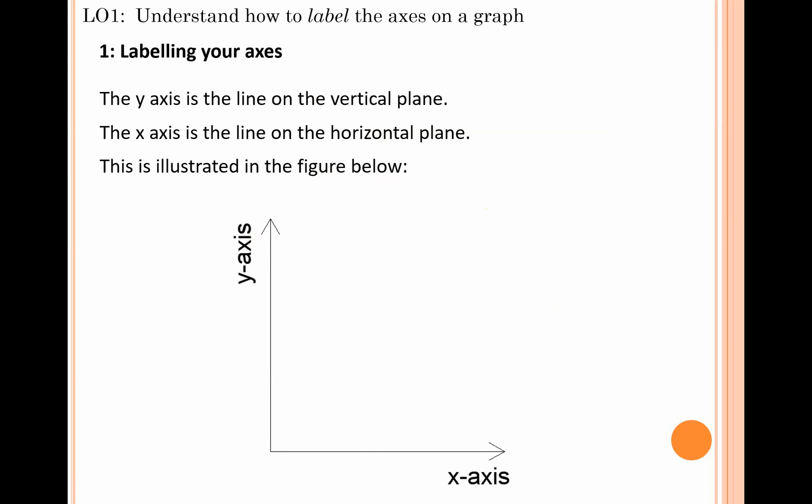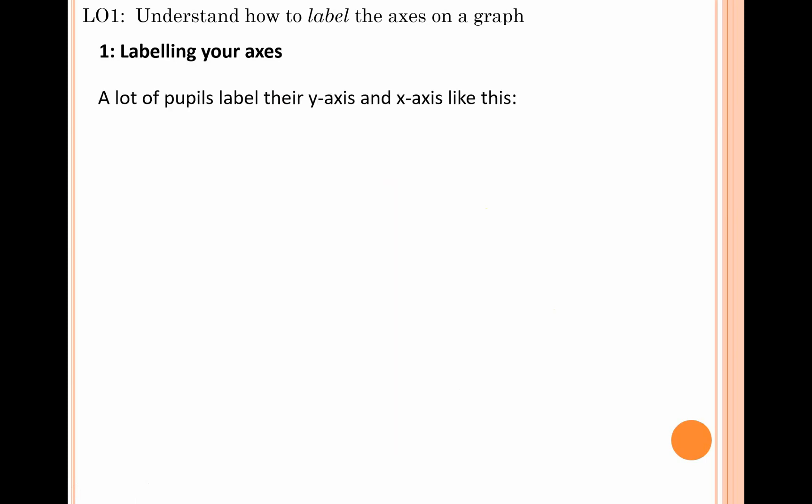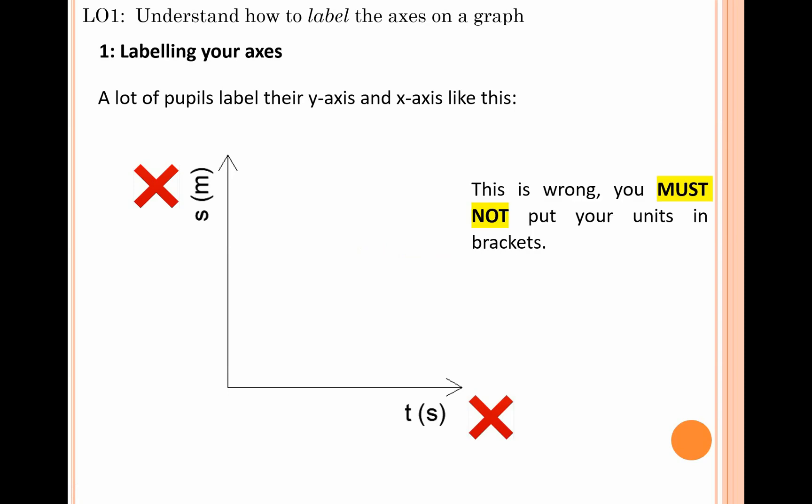When pupils are labeling both the y and x-axis, a lot of students will make a very simple and common mistake. They decide to put the unit inside a set of brackets. It doesn't matter what exam board you're doing—whether it's CCEA, and I go for marking exams for Edexcel—that's wrong. You will lose marks for putting the units inside brackets on either axis.